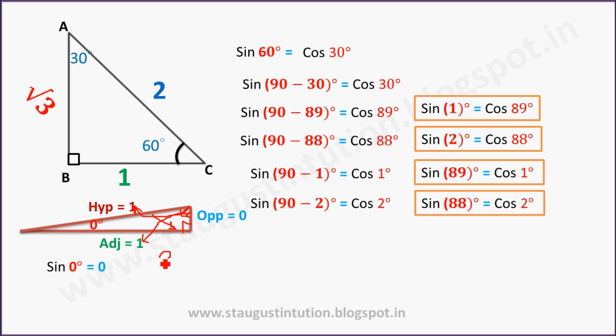That is sin 90°. Sin 90° equals 1 by 1, which equals 1.